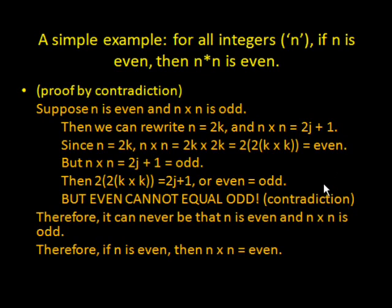But we assumed at the beginning that n times n is an odd number. So we've just proved that an even number is equal to an odd number, which we know is impossible, that's a contradiction. Therefore, our contradictory assumption at the beginning must be false. It is impossible to say that n is even and n times n is odd. Therefore, if n is even, then n times n must be even.